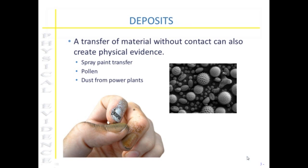Finally, deposits can produce physical evidence. This is a transfer of matter that occurs without contact — things such as spray paint or pollen that is more airborne. Gunshot residue expelled from a weapon as it's fired might deposit on the hands or other things in close proximity to that weapon being fired.